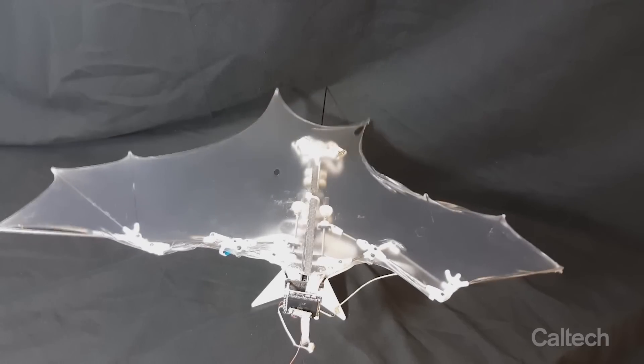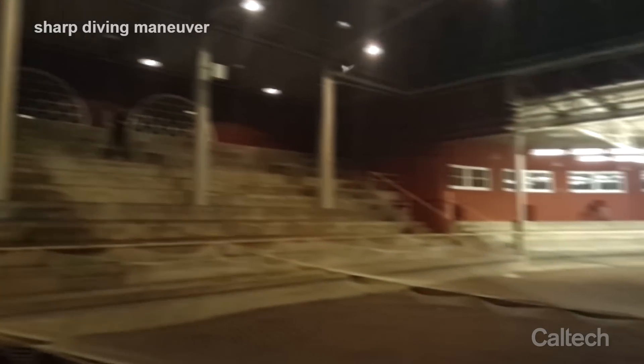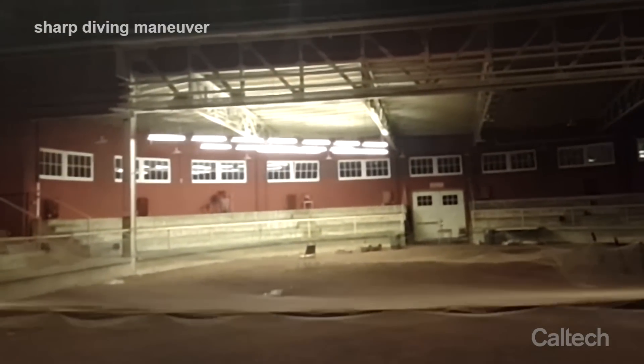B2's tail legs can be controlled independently. Sharp diving maneuver performed by bats when they pursue their prey was reconstructed by moving the hind limbs or legs.